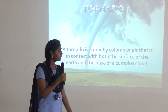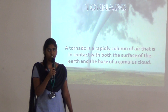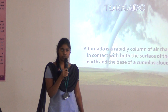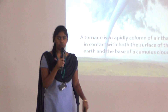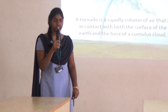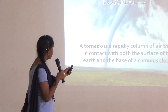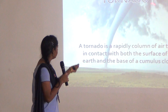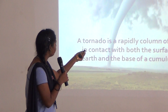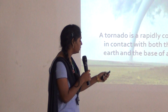Next is tornado. Tornado is a rapidly rotating column of air which is in contact with the surface of the earth and the base of a cumulonimbus cloud. Here you can see it is connected with the surface of the earth and the base of the cloud.